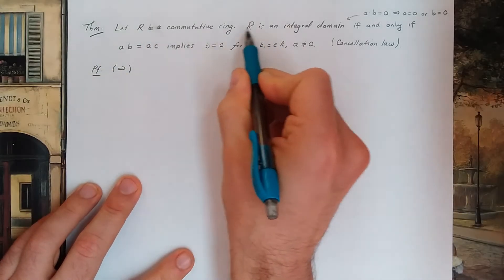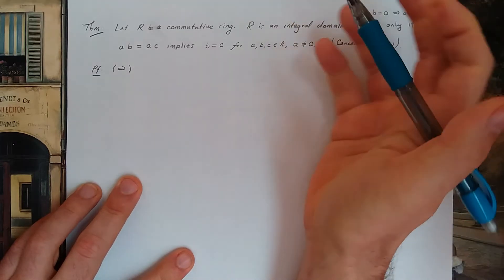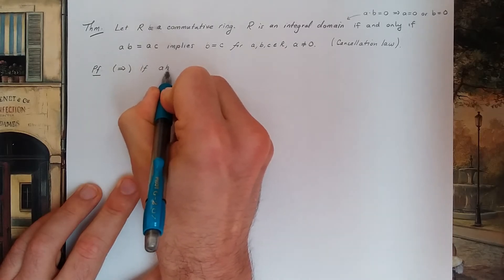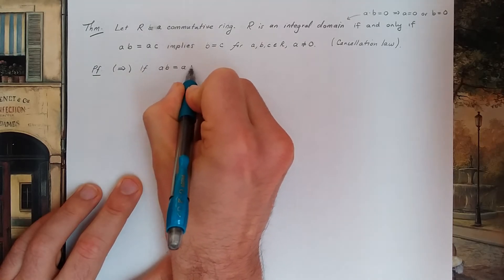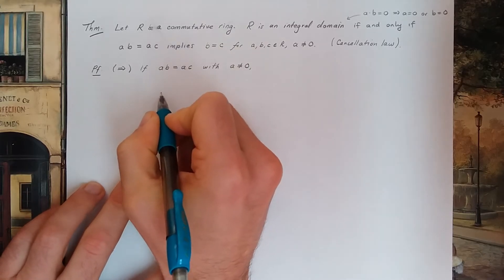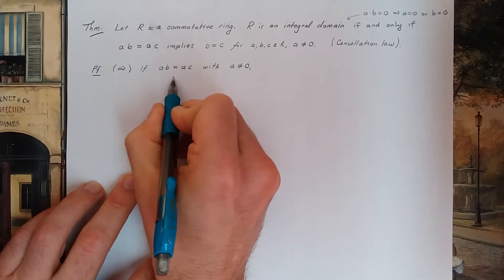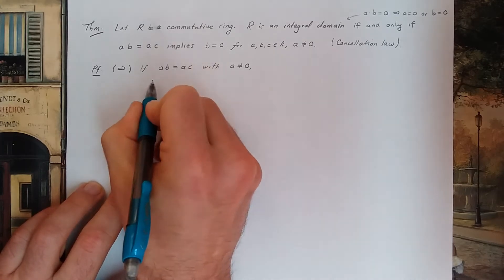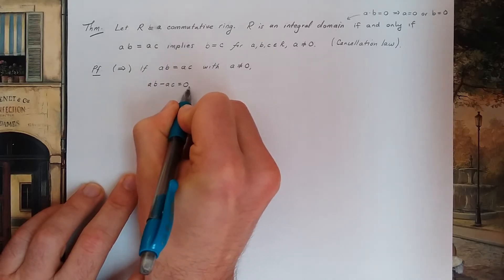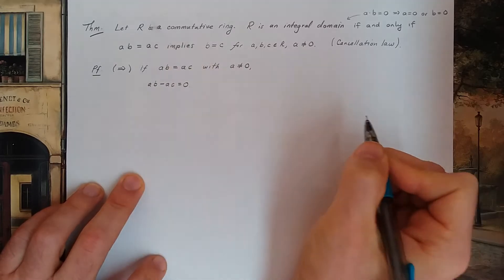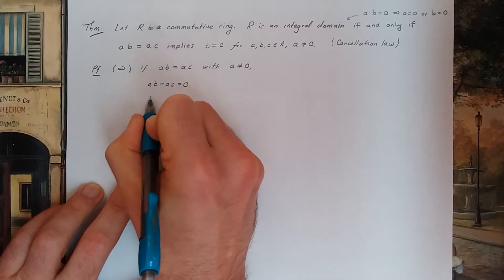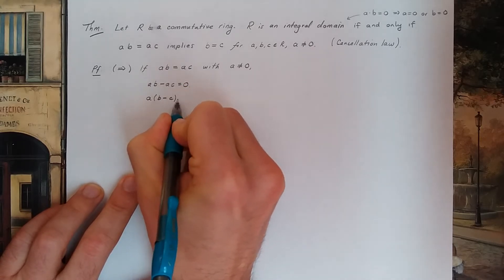So I'm gonna first assume R is an integral domain. So if we have ab equals ac with a not zero, then I can subtract ac on both sides. So I get ab minus ac is zero. Subtraction is legal in any ring. Additionally, the distributive laws hold. So this is a times b minus c equals zero.